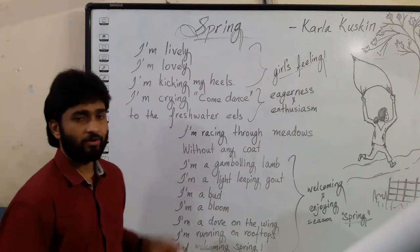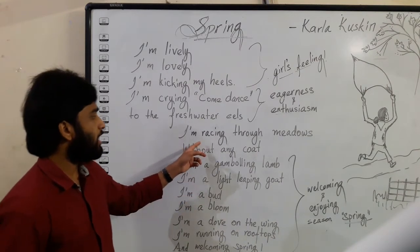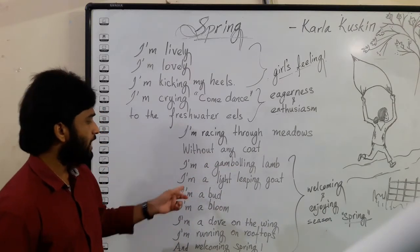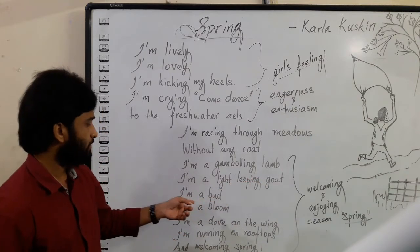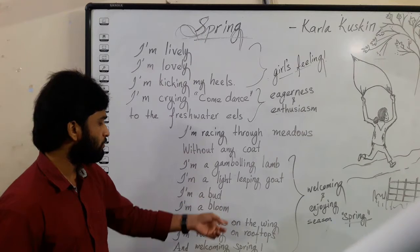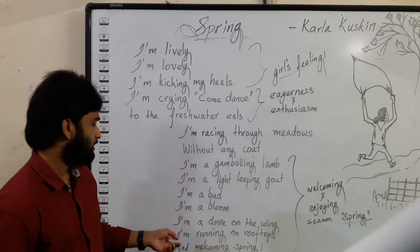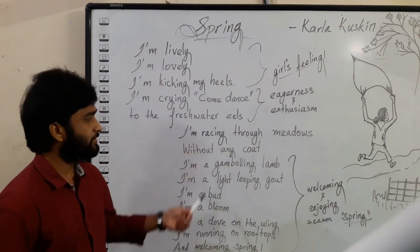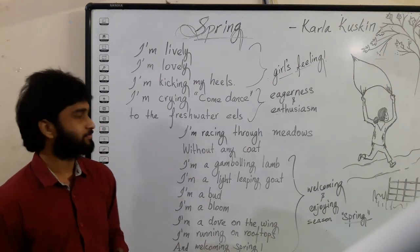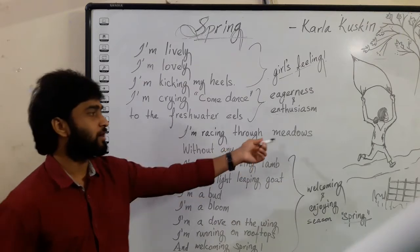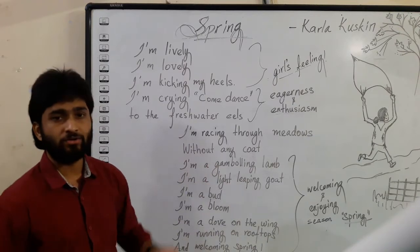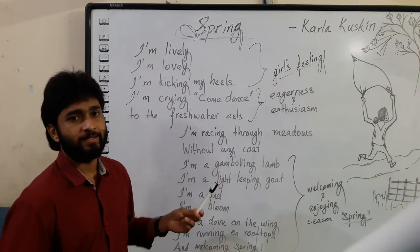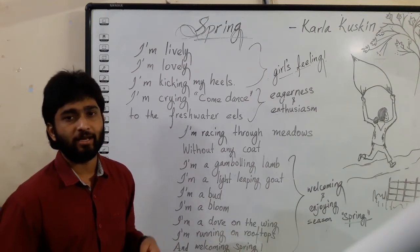The fourth and final stanza: 'I am rising through meadows without any coat, I am a gnawing lion, I am a light-leaving goat, I am a bat, I am a blue, I am a dove on the wind, I am running on the roof doors and welcoming spring.' Here, she is running through the meadows and grasses without her warm coat, which signifies the end of winter and the beginning of spring.